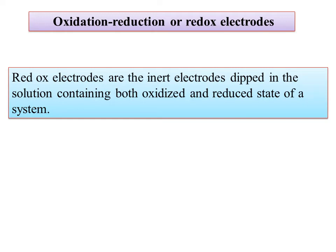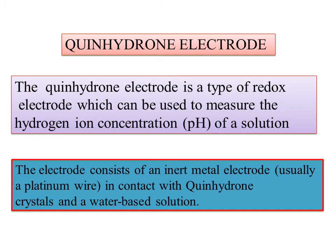Redox electrodes can be used as an inert electrode. When dipped in a solution containing both the oxidized and reduced state of a system, the redox potential develops. The same electrodes can be used as redox electrodes. A quinhydrone electrode is a type of redox electrode which can be used to measure the pH of the solution.